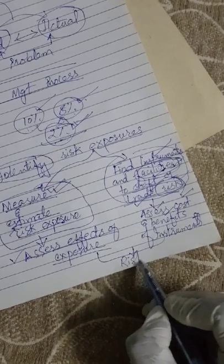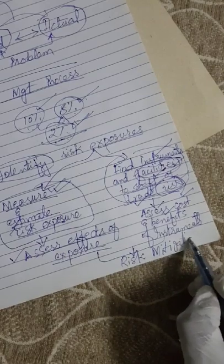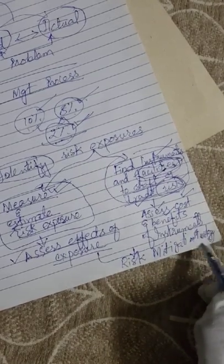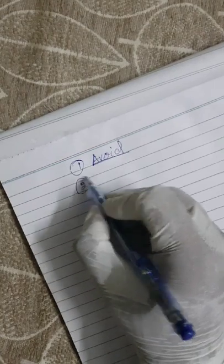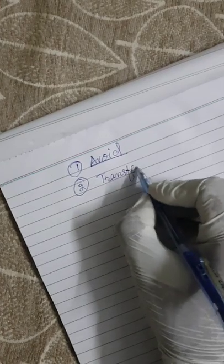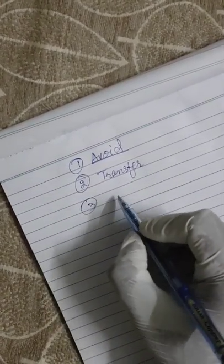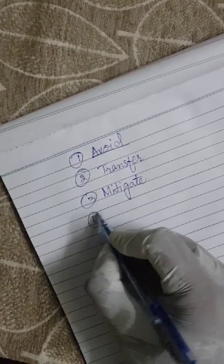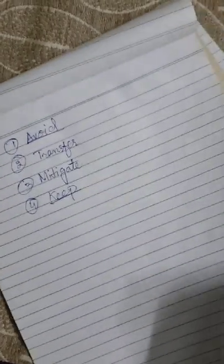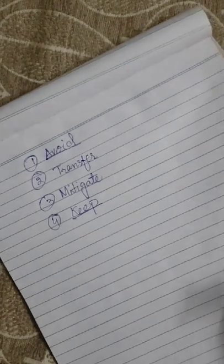The next step is the risk mitigation strategy. There are four types: first is to avoid the risk; second is to transfer the risk — what you do in a future or forward agreement is risk transfer; third is to mitigate, meaning you are ready to face the risk but trying to limit and reduce it; and fourth is to keep the risk, because more risk means more return. So you have to decide: avoid, mitigate, transfer, or keep the risk.